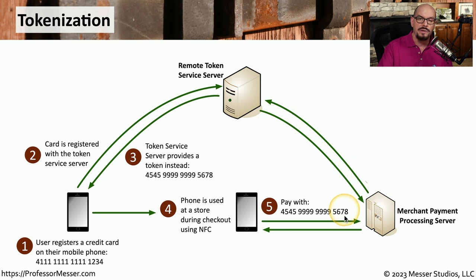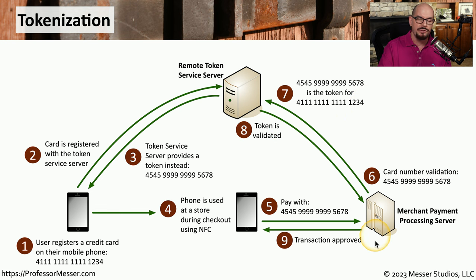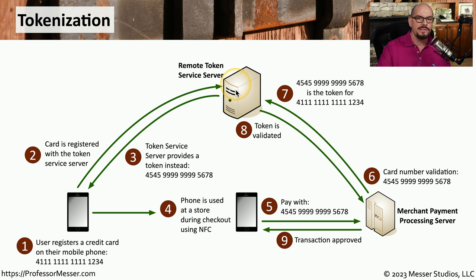Instead of sending your actual credit card number, you are paying with one of the tokens originally received from the token service server. The merchant then sends that token to the token service server, which does a reverse lookup to determine the actual credit card number. Now that the system knows the actual credit card number, it can validate that you have the proper funds or credit to perform the transaction, then validates the token and approves the transaction for the merchant. Once the token has been used, your phone throws it away — it can no longer be used for future transactions. Your phone then readies the next token in the list, or requests a new token from the token service server for the next transaction.